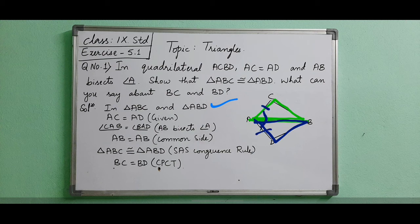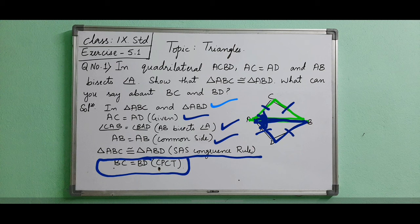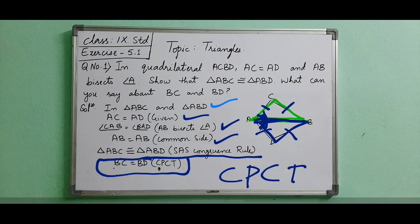The two angles CAB and BAD are equal because AB bisects angle A, dividing it into equal parts. AB is a common side for both triangles. Writing the reasons in brackets: by the SAS congruence rule, the triangles are congruent. When triangles are congruent, their corresponding parts — angles and sides — are equal. Therefore, BC equals BD, as they are corresponding parts of congruent triangles.